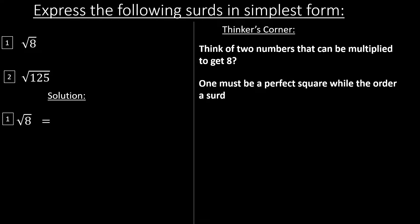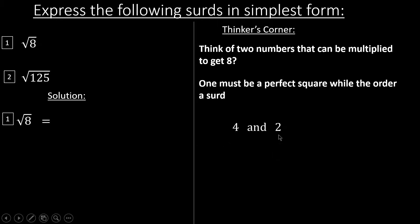The other must be a surd — you know, a surd can be root 2, root 3, root 5, root 7, root 11. One must be a perfect square, and that perfect square must be a factor of 8. That number is 4 and 2. As you can see, 4 is a perfect square and also a factor of 8. 4 times 2 gives us 8.